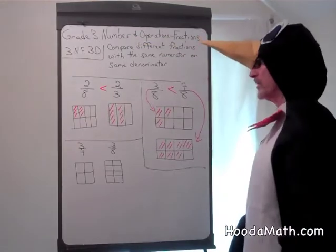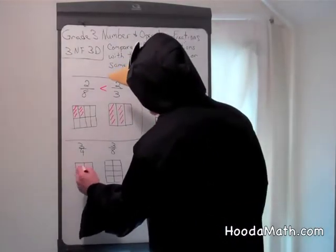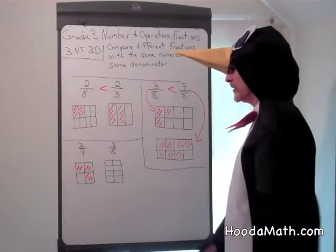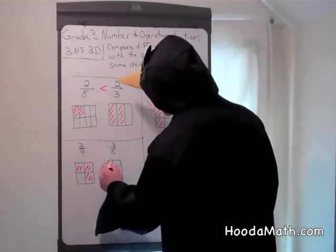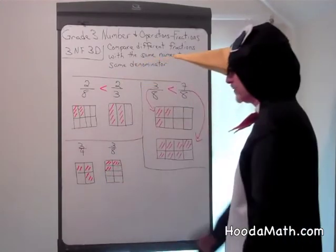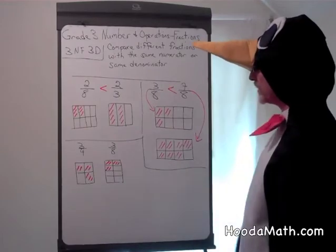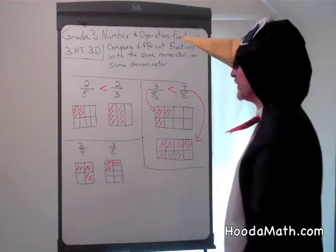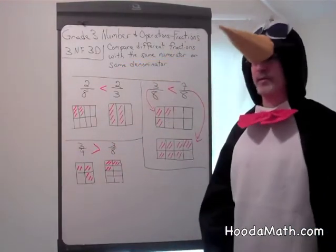Let's look at the third example: 3/4 and 3/8. 3/4 we would shade in 3 out of 4 squares. And 3/8 we're going to shade in 3 out of 8 rectangles. So what do you think? What pieces are bigger? These are bigger. There's 3 of them, and there's 3 small pieces. So 3/4 is larger than 3/8.